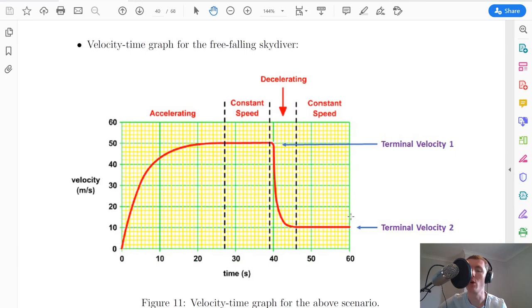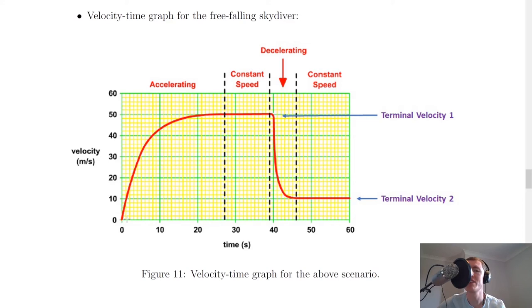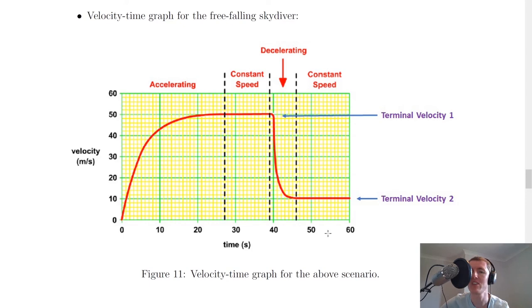Looking at the velocity-time graph in the notes: initially when the skydiver jumps out of the plane they accelerate. To begin with it is roughly uniform acceleration, but then the graph curves off — meaning it's no longer a uniform or constant acceleration. It becomes a changing acceleration due to the changing forces. Eventually the first terminal velocity is reached — a constant speed. When the skydiver opens their parachute there's a rapid deceleration; again this is a curved line because there are changing forces, so it's not constant deceleration. Eventually a much lower second terminal velocity is reached, safe enough to land without injury.